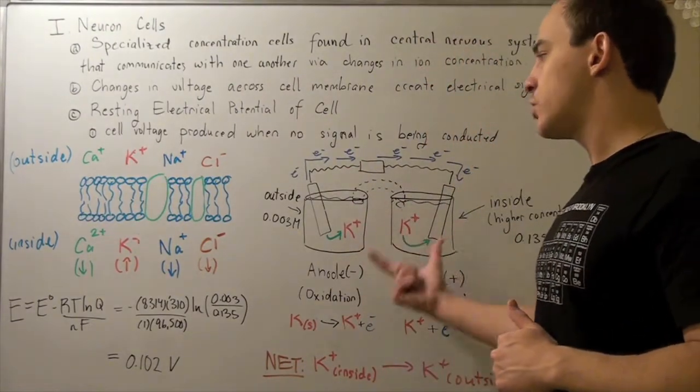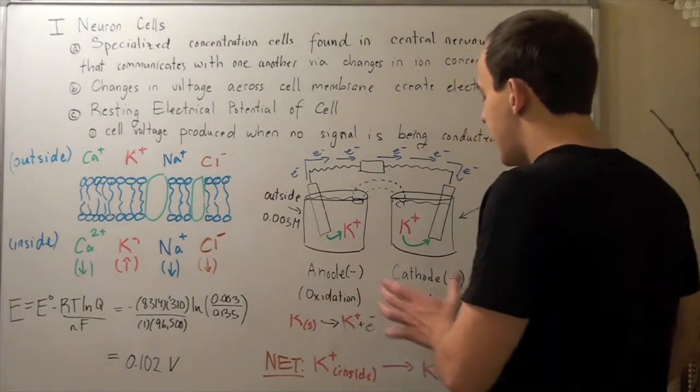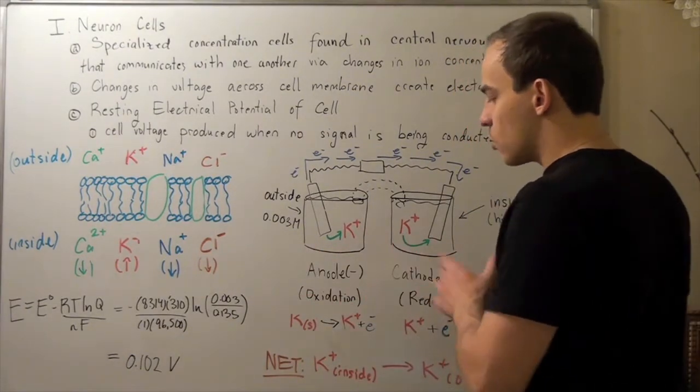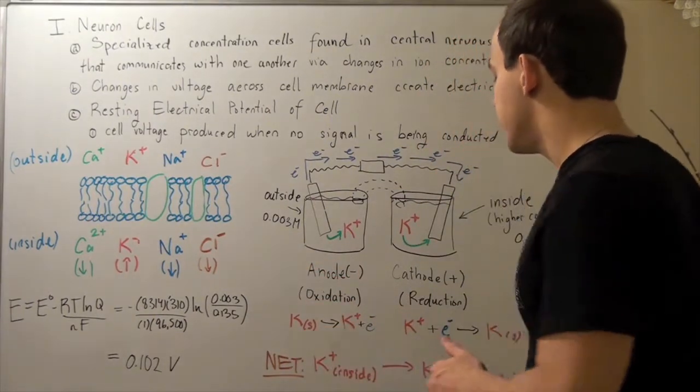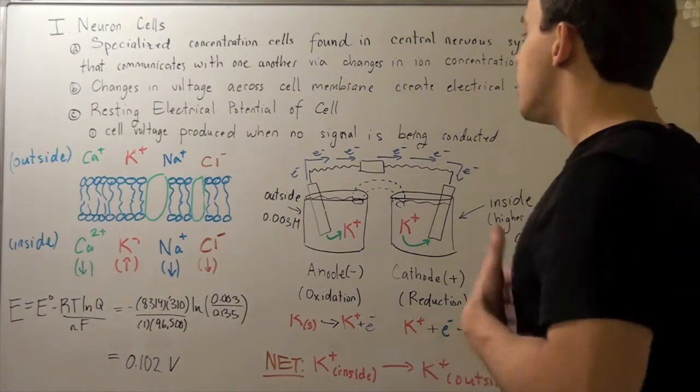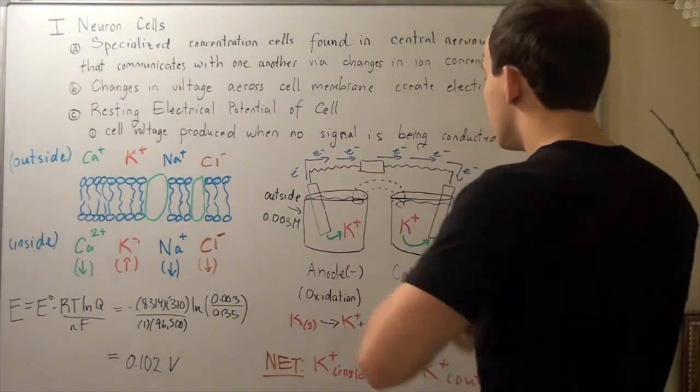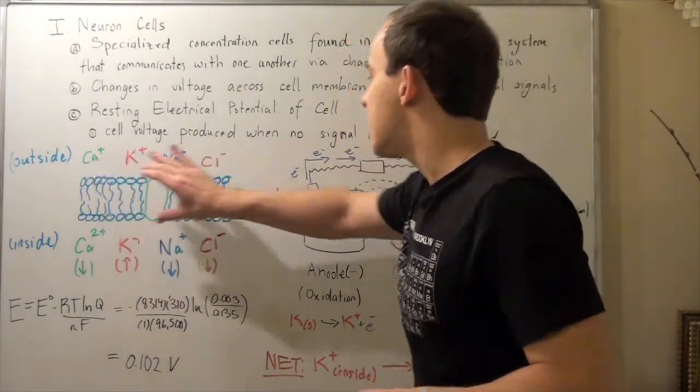This is our electrochemical concentration cell for potassium. This is our negatively charged anode and our positively charged cathode. This is where oxidation of potassium takes place, and this is where reduction of potassium takes place. You could think of this conductor, the electrodes, and the salt bridge as representing the cell membrane.